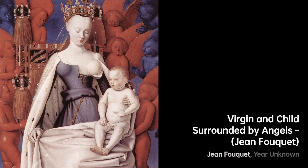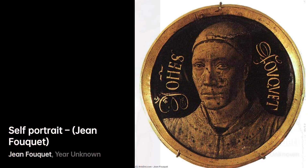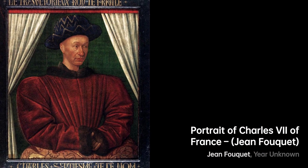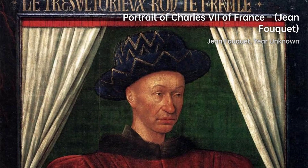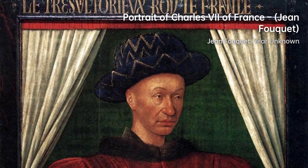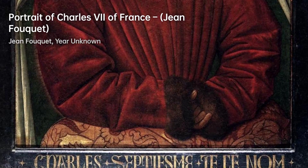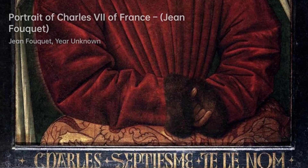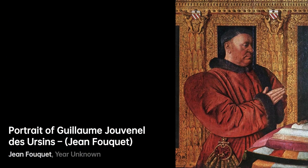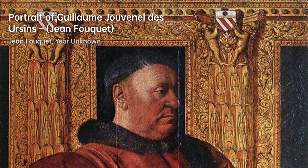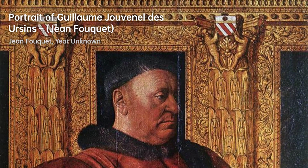Fouquet had a significant impact on the development of French art in the early 15th century. He incorporated elements of the Tuscan style into his work while still maintaining his French sensibilities. His art became the foundation of a new school and played a crucial role in solidifying French national identity after the Hundred Years' War.